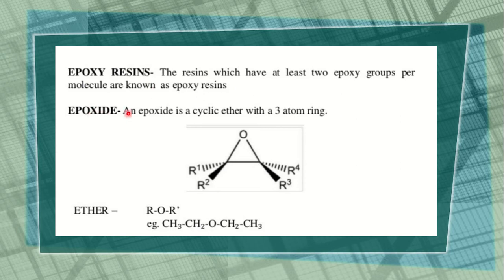Epoxide is a cyclic ether with a three-atom ring. The structure of an ether is R-O-R'. For example, ethyl ether: CH3-CH2-O-CH2-CH3.